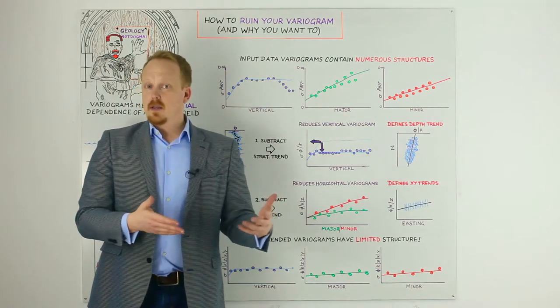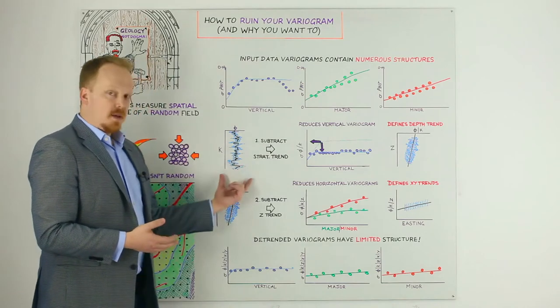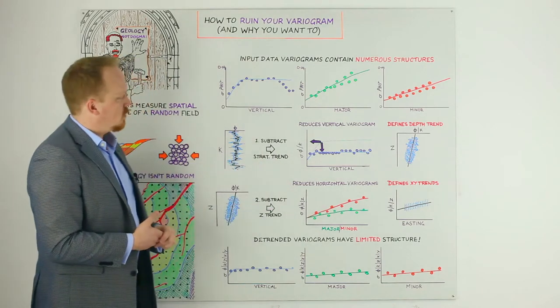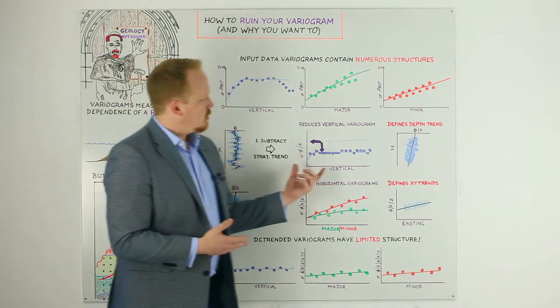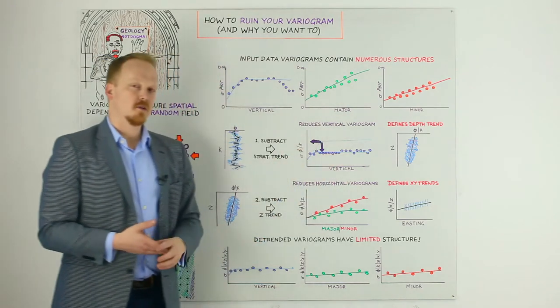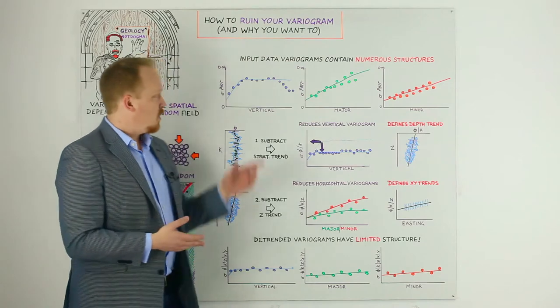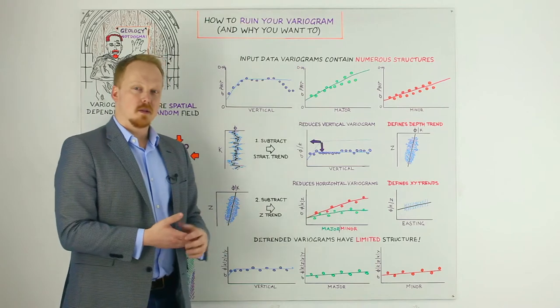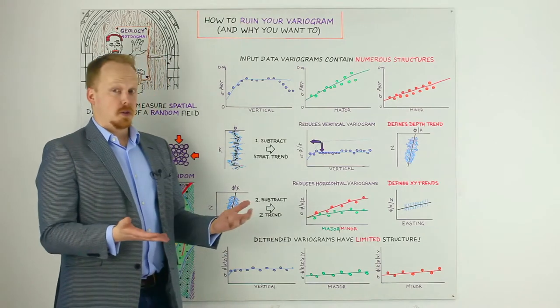You're basically representing sequence cyclicity when you do this. You want to keep that trend, this black line here, because you have to add it back into your model afterwards. But when you do it, you see a reduction in the vertical variogram, as you would expect. We have described a lot of the variation that's occurring in this direction as a function of sequence cyclicity, and it's not just random.